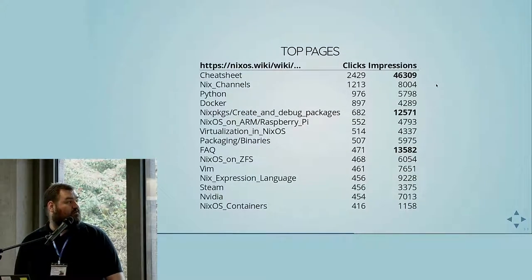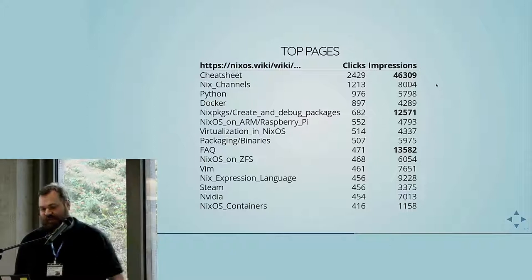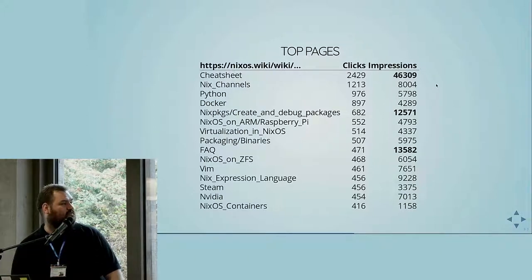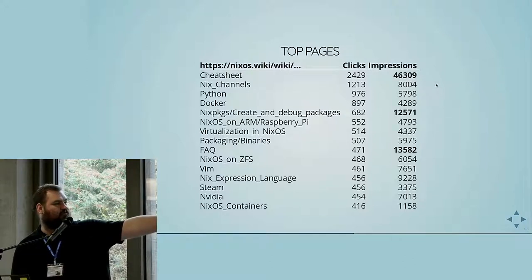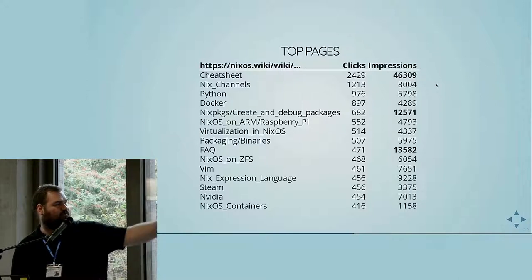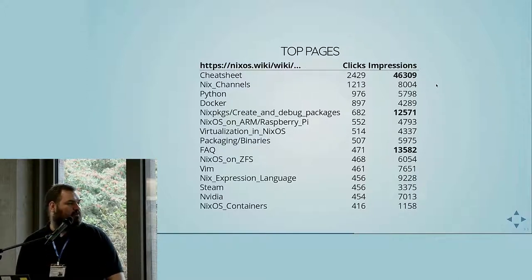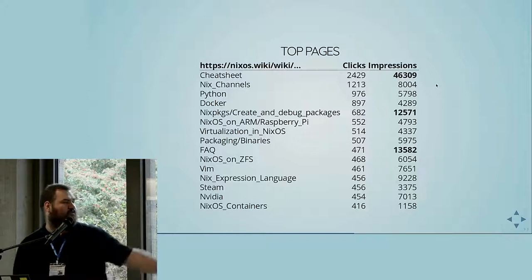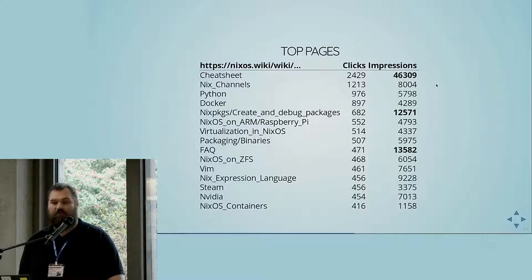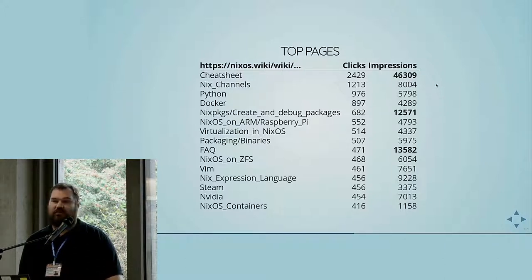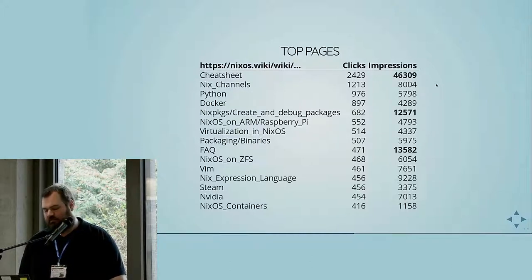The top pages of the wiki — of course the cheat sheet. Some pages have way more impressions than are appropriate for the number of clicks, but those might be pages we want to work on, especially the FAQ and the create-and-debug-packages page. Perhaps we should even think about extending the official documentation, especially around package creation, if people are looking it up in the wiki instead of the documentation. That's one thing to think about.